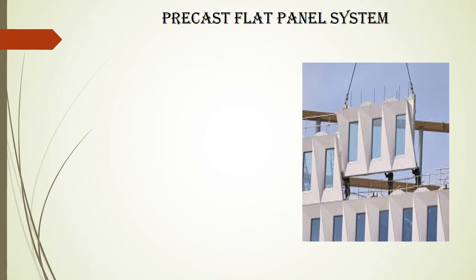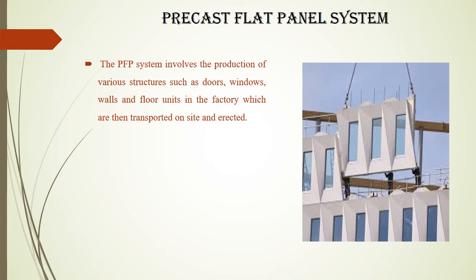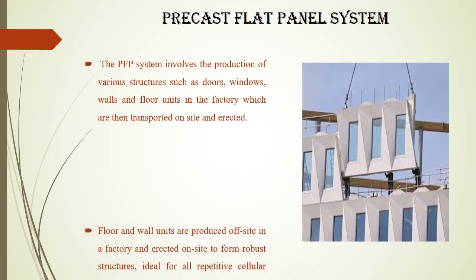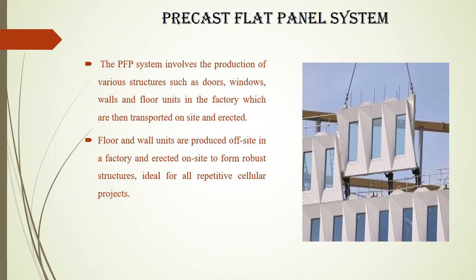The third modern method is the pre-cast flat panel system or PFP system. The PFP system involves the production of various structures such as doors, windows, walls and floor units in the factory, which are then transported to site and erected. Floor and wall units are produced off-site and erected on-site to form robust structures, ideal for all repetitive cellular projects. The panels may include services, windows, doors and finishes.